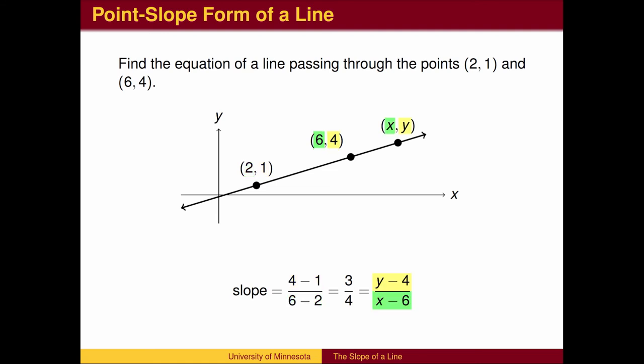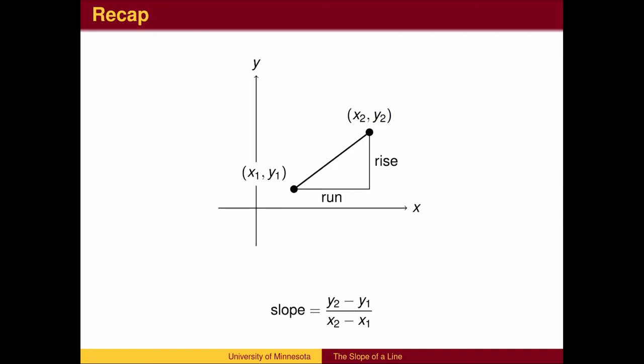Once we know the slope, we write the general equation by writing the slope formula using the slope, an arbitrary point x, y, and a known point. To recap, the slope of a line is found by the slope formula.